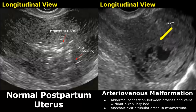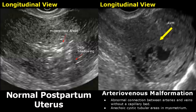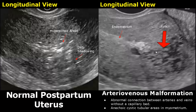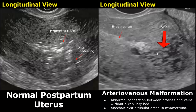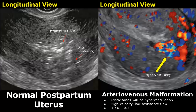Arteriovenous malformation is rare but can occur after a miscarriage, dilation and curettage, or any uterine injury. It presents with heavy vaginal bleeding and is an abnormal connection between the arteries and veins without a capillary bed. On ultrasound, anechoic cystic tubular areas are seen in the myometrium. On color Doppler, these cystic areas will be hypervascular, showing low-resistance, high-velocity flow with a resistive index between 0.2 to 0.5.